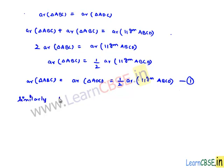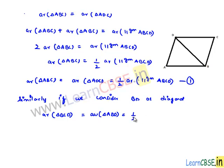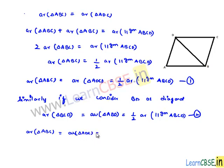Similarly, if we consider BD as the diagonal and proceed in the same way, then we get area of triangle BCD equal to area of triangle ABD equal to half times area of parallelogram ABCD. Let this be our second equation. From equations 1 and 2, we can say that area of triangle ABD equals area of triangle BCD equals area of triangle ABC equals area of triangle ACD equals half times area of parallelogram ABCD.